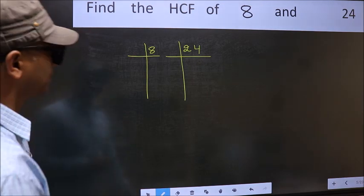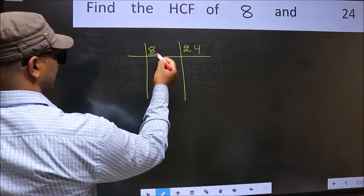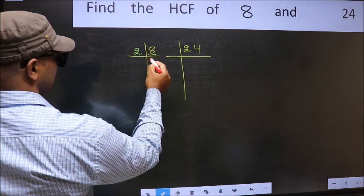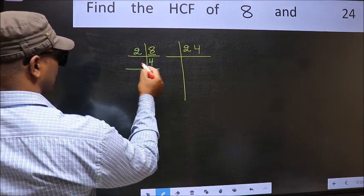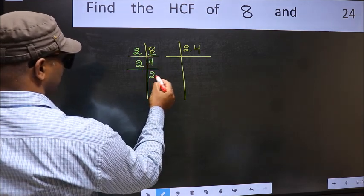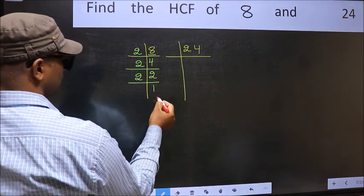Next, here we have 8. 8 is 2 times 4 is 8. 4 is 2 times 2 is 4. Now 2 is a prime number so 2 times 1 is 2.